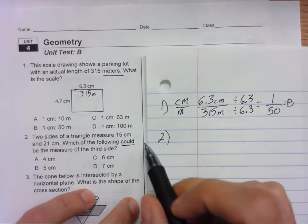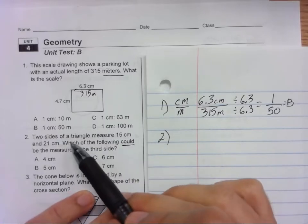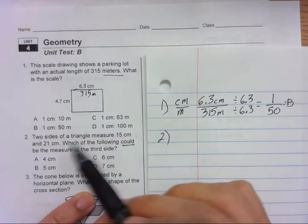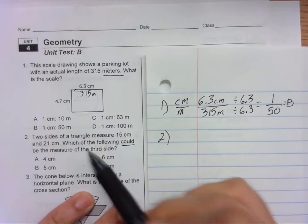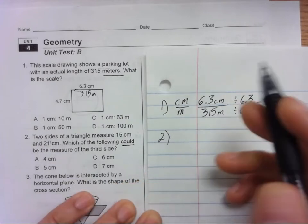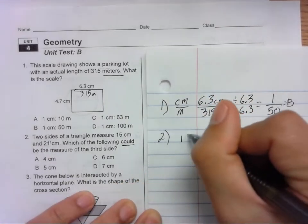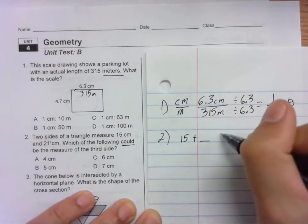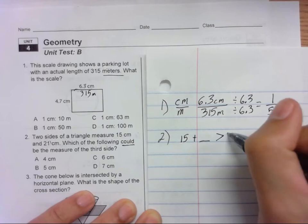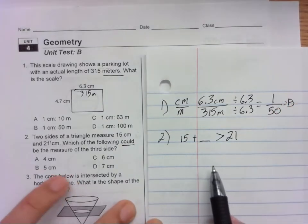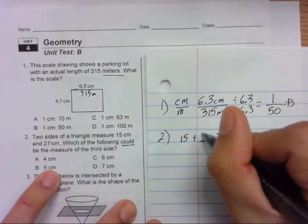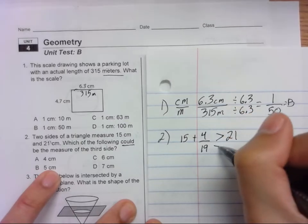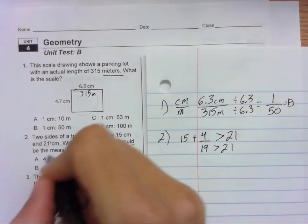We have two sides here, 15 and 21. All of these options are smaller, so we know that 21 is the biggest one. We need to have 15 plus something has to be greater than 21 for it to work as a triangle. Let's put in 4. 15 plus 4 is 19. That is not greater than 21, so 4 cannot be it.